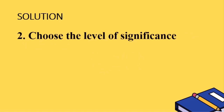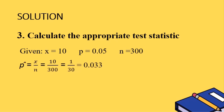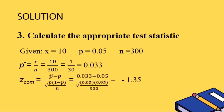Step 2: The level of significance is alpha equals 0.01, as stated in the problem. Step 3: Given x equals 10, p equals 0.05, and n equals 300. Computing p-hat equals x over n equals 10 over 300 equals 1/30 or 0.033. Computing the z-value using the formula: p-hat minus p divided by the square root of p times (1 minus p) over n. Substituting the given values, the answer is negative 1.35.